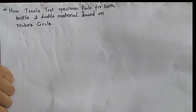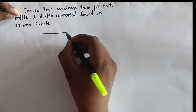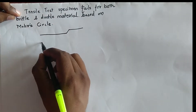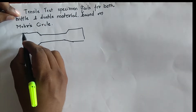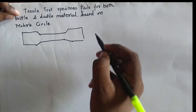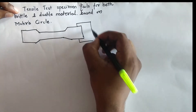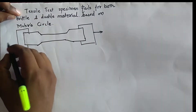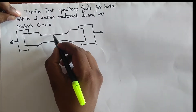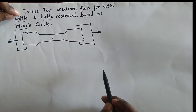Today we are going to learn about how a tensile specimen fails for both brittle and ductile materials. The tensile specimen is a dumbbell specimen. The tensile test is conducted on a universal testing machine where you apply force on one side and fix the other side. Force is applied on both sides, so failure might be occurring at the center. We are going to see how that failure occurs for brittle and ductile materials.